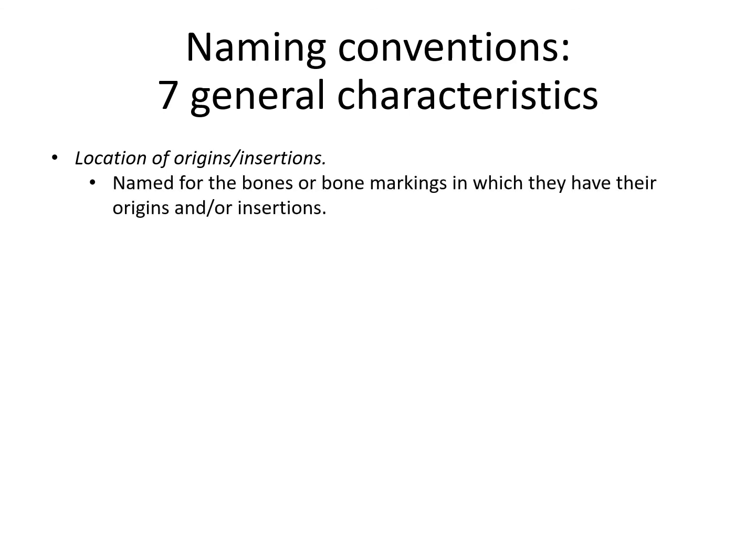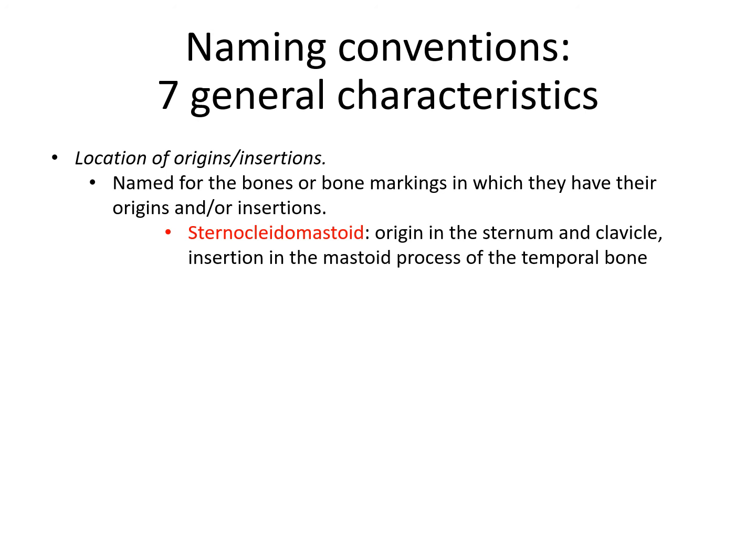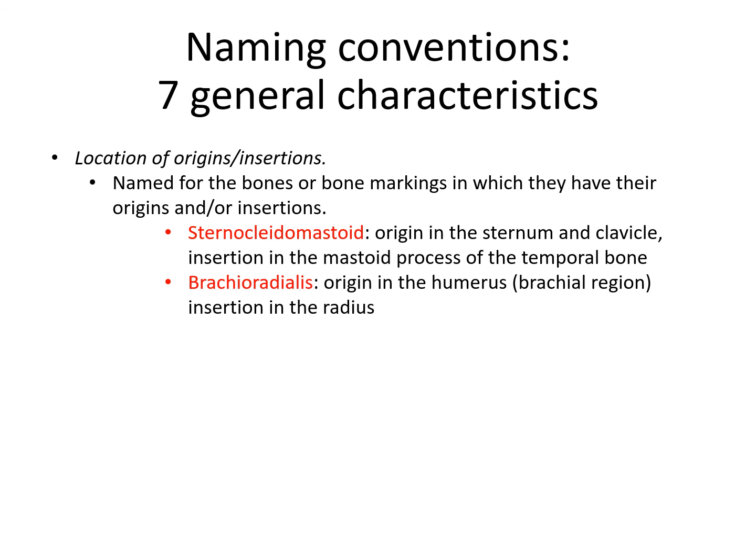The location of the origin and insertion can be another naming characteristic — the muscle is named for the bones or bone markings at which it originates or inserts. For example, the sternocleidomastoid has its origin in the sternum and clavicle and its insertion in the mastoid process of the temporal bone — basically running from your collarbone and sternum up to the point just below your ear. The brachioradialis has its origin in the humerus in the brachial region and its insertion in the radius, so when it shortens it pulls the radius back towards the brachial region.